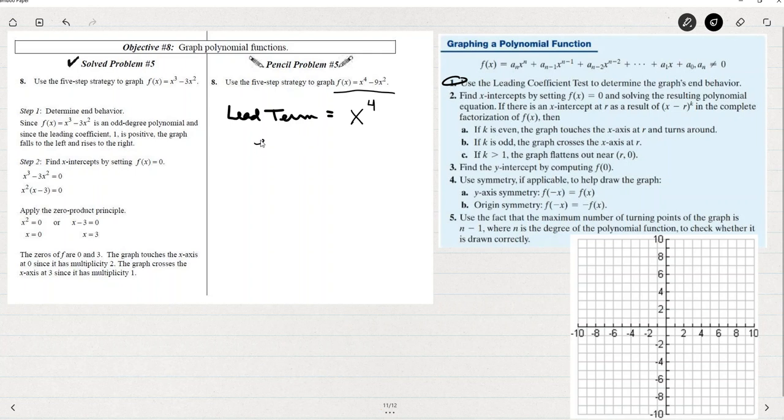The lead term is one x to the fourth. That is an even degree with a positive coefficient. So I know that this behaves like a parabola, a positive parabola, a parabola opening upward, so we see that it rises to the left and it rises to the right.